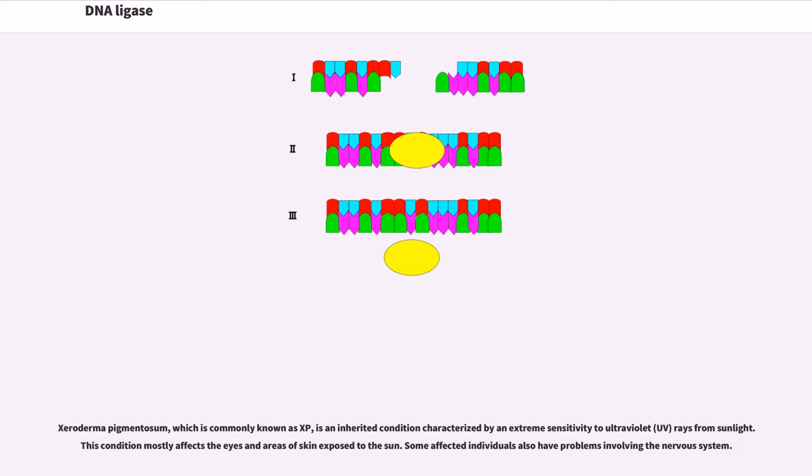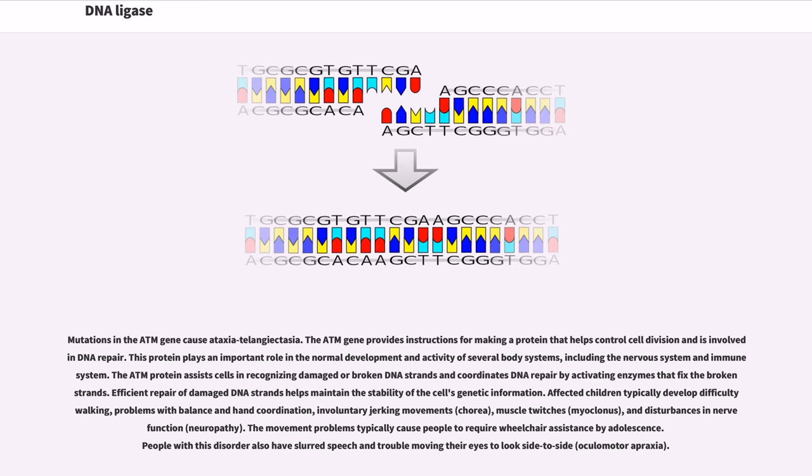Some affected individuals also have problems involving the nervous system. Mutations in the ATM gene cause ataxia telangiectasia. The ATM gene provides instructions for making a protein that helps control cell division and is involved in DNA repair. This protein plays an important role in the normal development and activity of several body systems, including the nervous system and immune system. The ATM protein assists cells in recognizing damaged or broken DNA strands and coordinates DNA repair by activating enzymes that fix the broken strands.